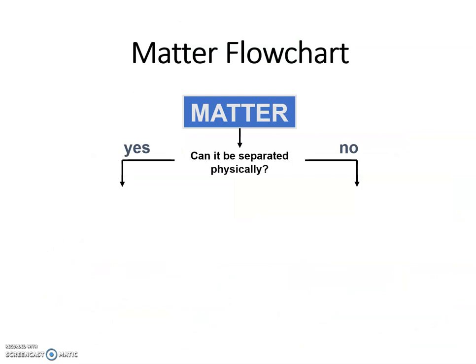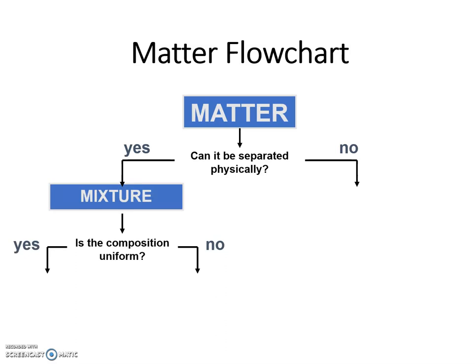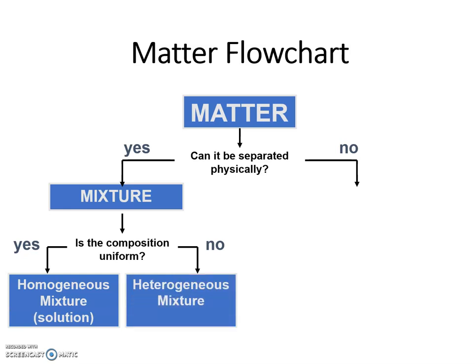So here's a flowchart that can help us out also. So first of all, if it can be separated, that means that it is a mixture. If the mixture is uniform, that means that it's homogeneous, meaning you can't see the difference. If it's not, then we have a heterogeneous mixture.